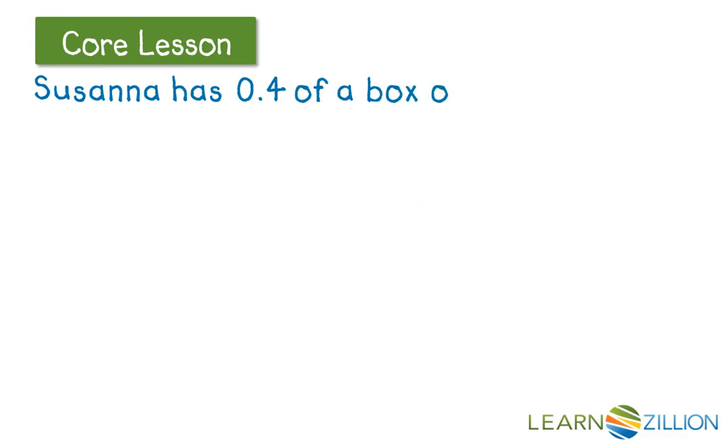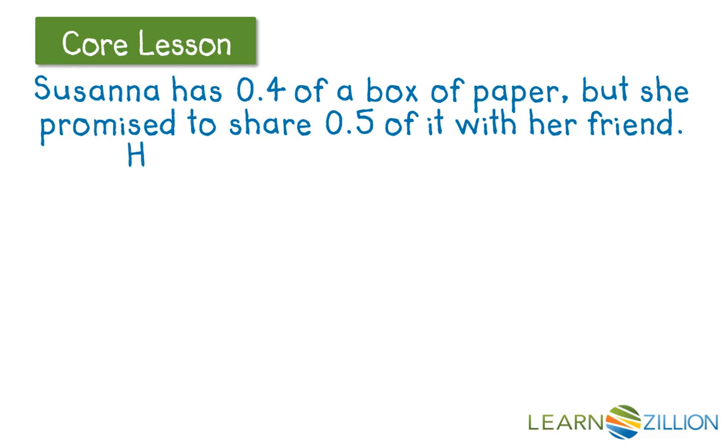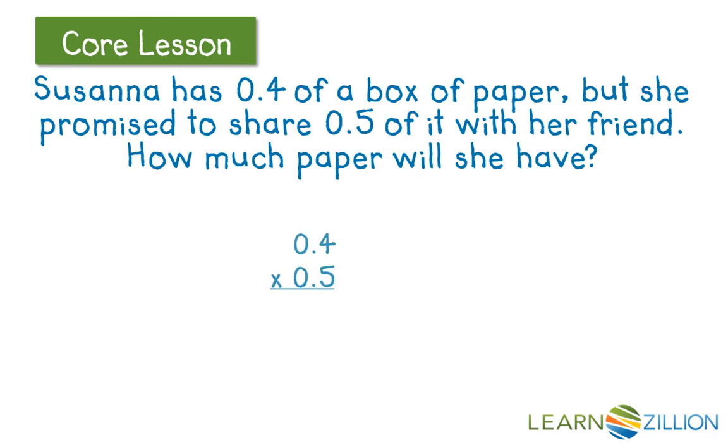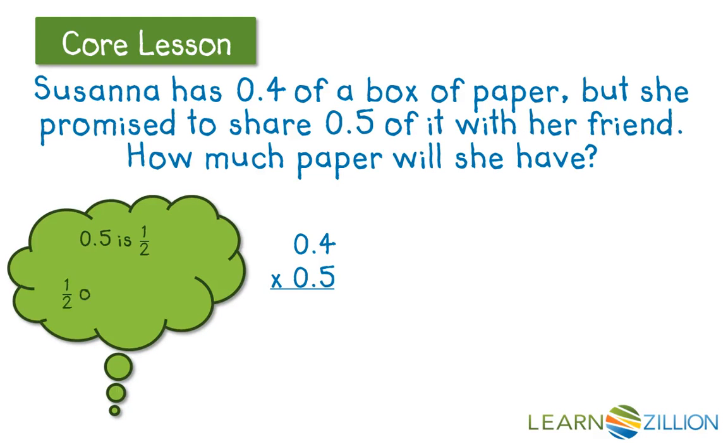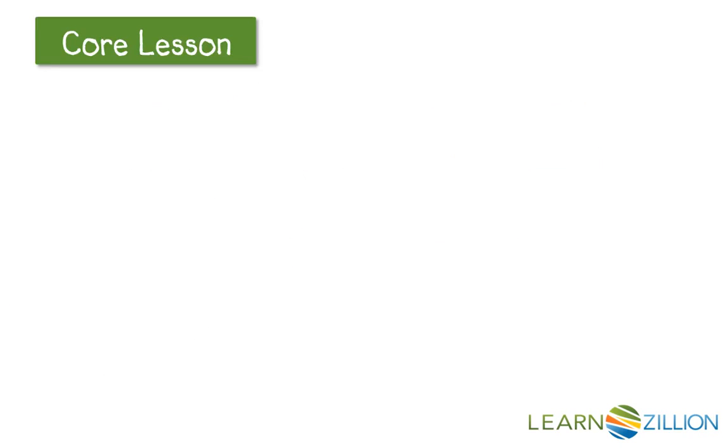Let's try another one. Susanna has 4 tenths of a box of paper, but she promised to share 5 tenths of it with her friend. How much paper will she have? So I'm going to have 4 tenths times 5 tenths. Well, I know that 5 tenths is half, and half of 4 tenths is 2 tenths. So my smart estimate is I think we're going to come up with an answer that is around 2 tenths, or exactly 2 tenths.